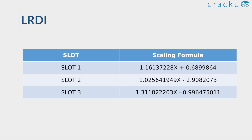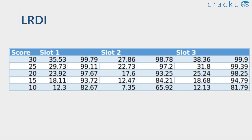Now let's look at the scaling formula for the LRDI section. For Slot 1 LRDI, this formula was used; for Slot 2, this formula; and for Slot 3, this formula. These are your raw scores, these are the scaled scores, and these are the percentiles.